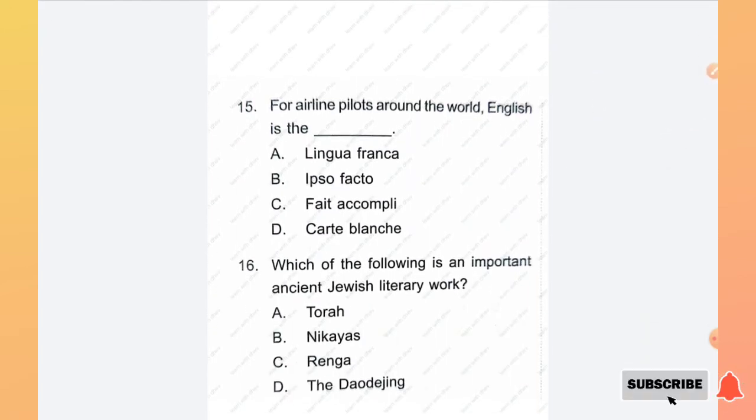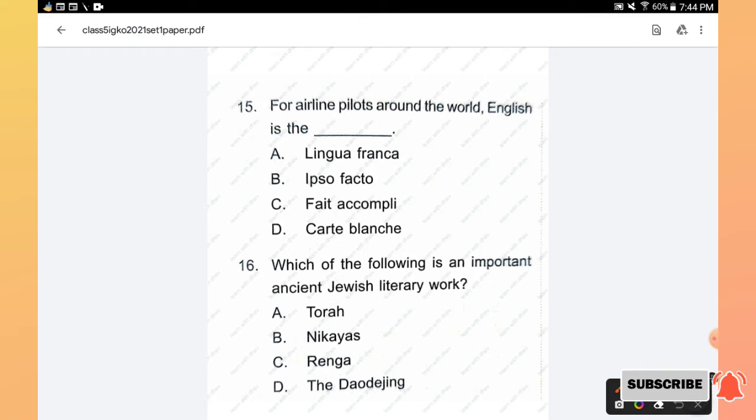Question number 15: For airline pilots around the world, English is the lingua franca, ipso facto, fait accompli, or carte blanche. Which of the following is an important ancient Jewish literary work? Options are Torah, Nikayas, Ramayana, Tao Te Ching. The right answer is option A, Torah.